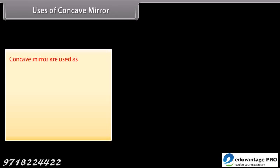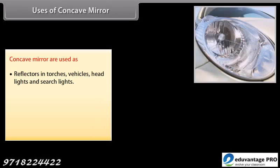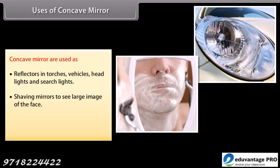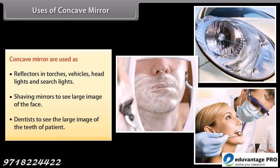Uses of concave mirror: concave mirrors are used as reflectors in torches, vehicle headlights, and searchlights. They are also used as shaving mirrors to see a large image of the face, and by dentists to see large images of the teeth of patients.